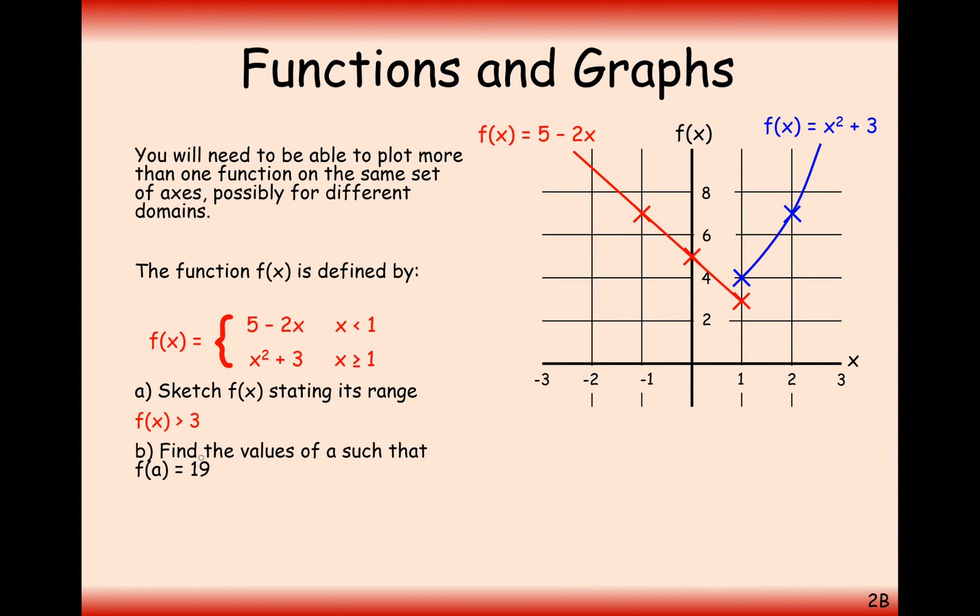The next question now is a more tricky one. Find the values of a such that f(a) equals 19. Well 19 is going to be somewhere up here. So what is the possible output values for this value 19 up here? And there are probably going to be 2. One for this red graph and one for this blue graph. So we're going to have to solve 2 equations to get the 2 answers that we need here.